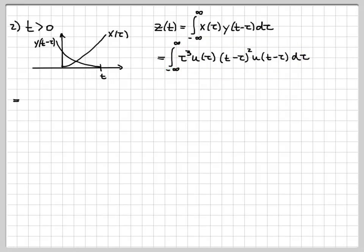So this entire integral right here, basically, instead of an integral from minus infinity to infinity, turns into an integral from 0 to t of t cubed, t minus tau squared, I'm sorry, tau cubed, t minus tau squared, d tau.